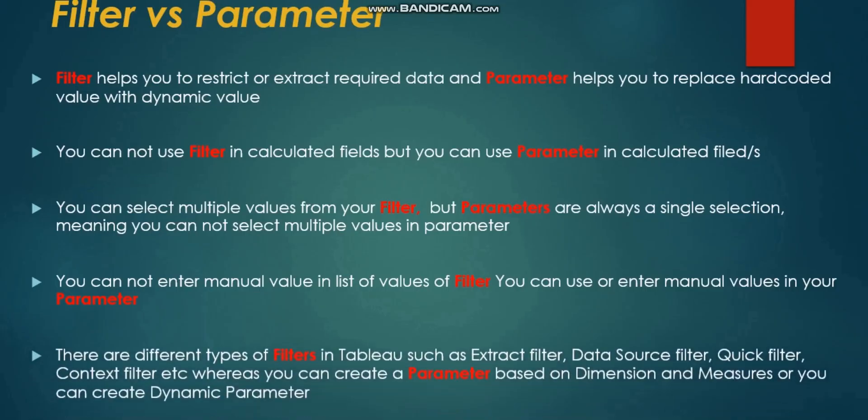The last difference: there are different types of filters in Tableau, such as extract filter, data source filter, quick filter, context filter, etc. Whereas for parameters, you can create a parameter based on a dimension or measure, or you can create a dynamic parameter as well.